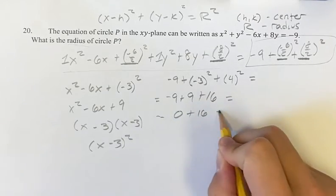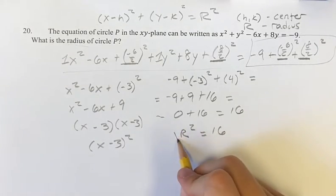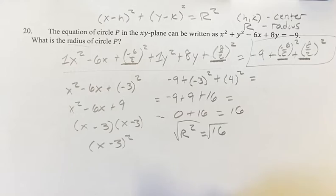negative 9 plus 9 is 0. Plus 16, that's just equal to 16. So r squared is equal to 16. What you can do here, solve for r. Take the square root of both sides.